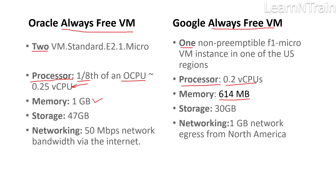Oracle is providing 1 GB of RAM, while Google is providing only 614 MB. Oracle is providing 47 GB of built-in storage, however Google is only providing 30 GB. Regarding networking, Oracle states that internet access to these virtual machines has a bandwidth of 50 Mbps. Google allows a maximum of 1 GB in total data transfer, or network egress — meaning data going out of the virtual machine from North America.